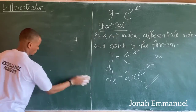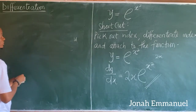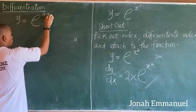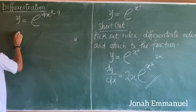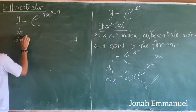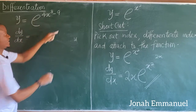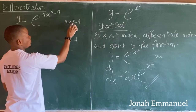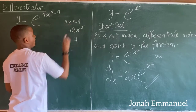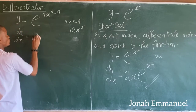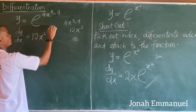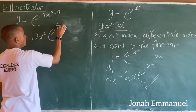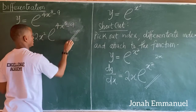Let's look at other examples with the shortcut method. If y is equal to exponential of 4x cubed minus 9, then dy over dx equals — pick out the index. The index here is 4x cubed minus 9. Differentiate 4x cubed minus 9, I have 12x squared. Attach this to the function: 12x squared exponential 4x cubed minus 9. That's the answer.